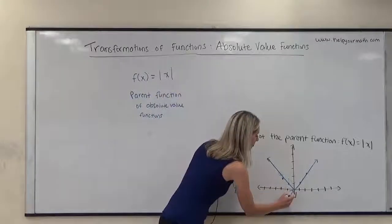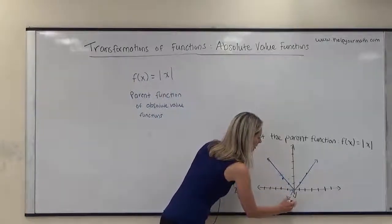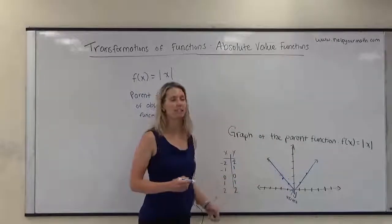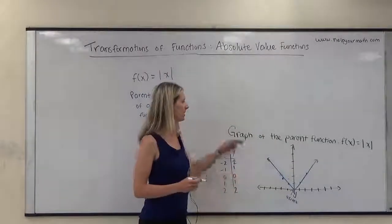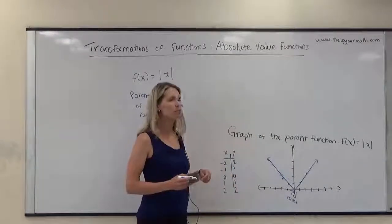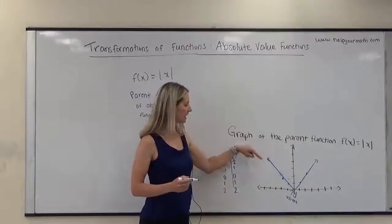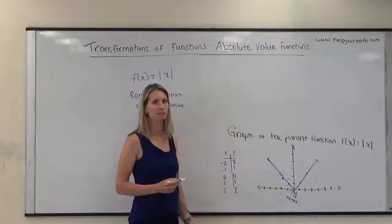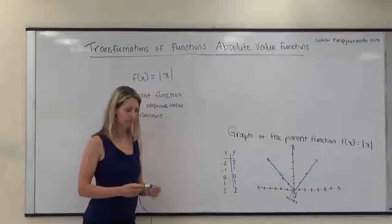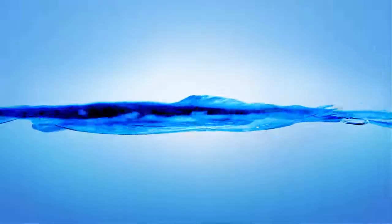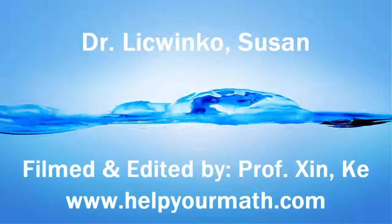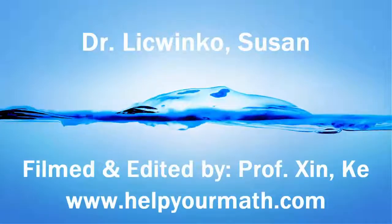So this is a really important point — the point (0, 0). In this particular case it's a minimum. With the absolute value function, it is a sharp point at (0, 0). So this is a really important point.